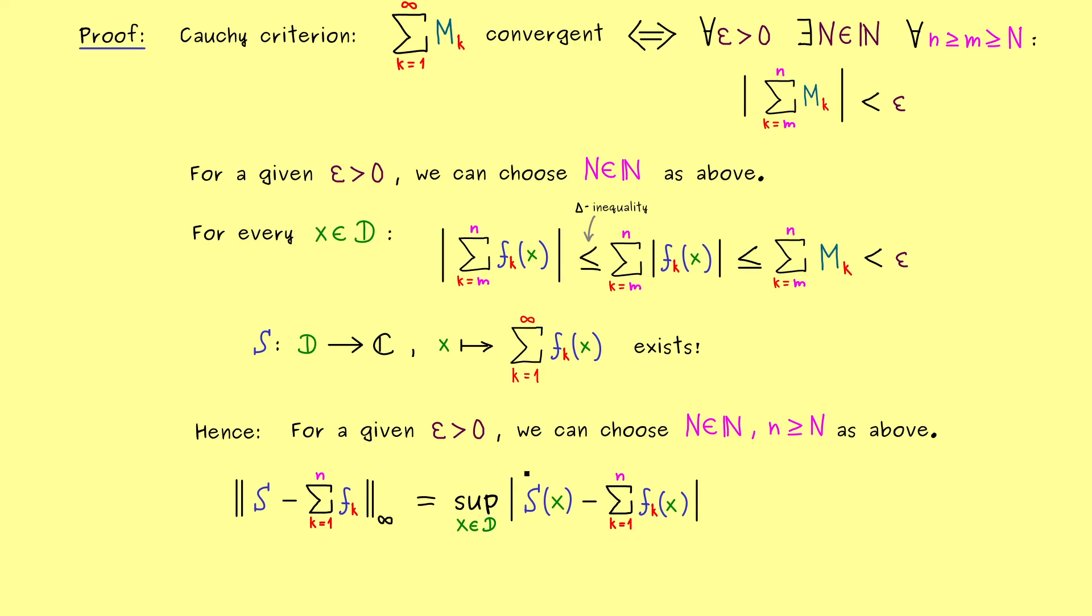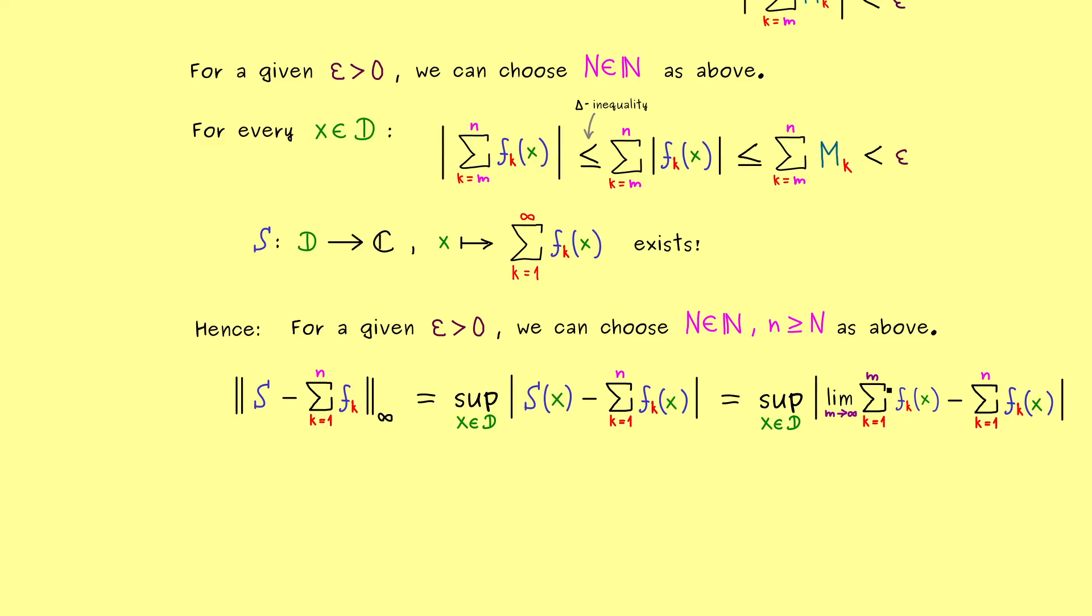And then in the next step, we can simply substitute S with the limit definition. This means instead of the infinity symbol here, we can just write limit of the partial sums. So maybe let's use a number m that goes to infinity. And now we can simply use that the absolute value is a continuous function, which means we can pull out the limit. So it's not a problem at all to write the limit in front of the absolute value. And then you should see, inside the absolute value, it looks much simpler now. We just subtract finite sums, so we know a finite sum remains.